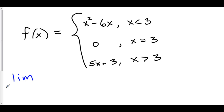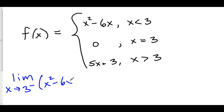Let's take the limit as x approaches 3 from the left-hand side. Approaching from the left means we use our top function, x squared minus 6x. Plugging in: 3 squared is 9, minus 6 times 3 is 18, so 9 minus 18 is negative 9. The left-hand limit is negative 9.